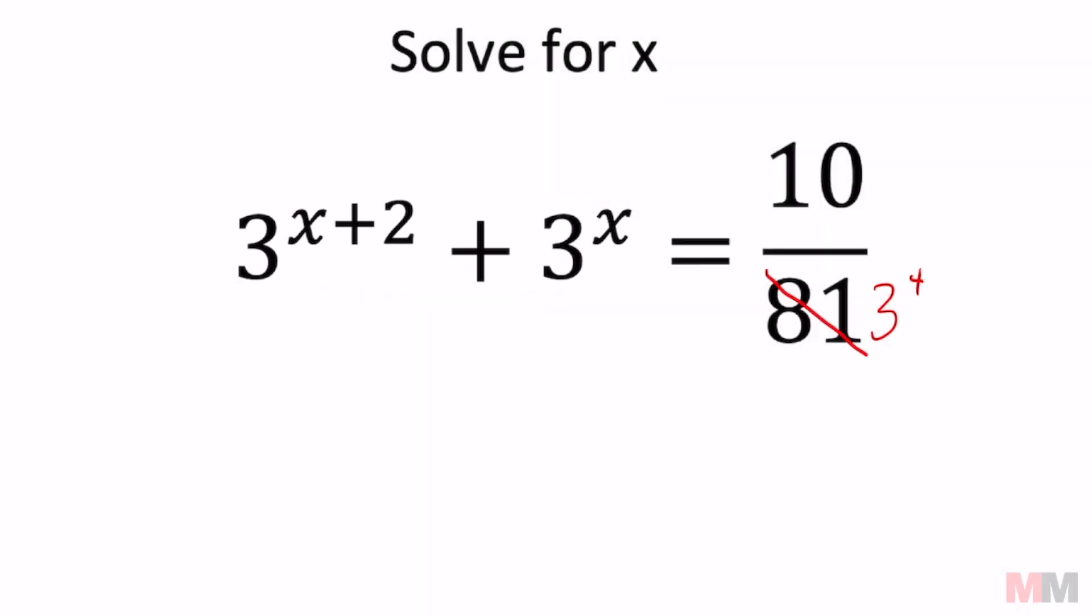Knowing your rules of exponents, this right here can be split up into two pieces. That is the same as 3 to the x power times 3 squared. I'm just taking products of powers backwards. And I cannot combine these yet at this state.